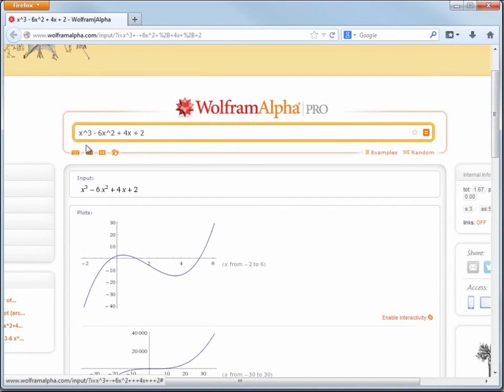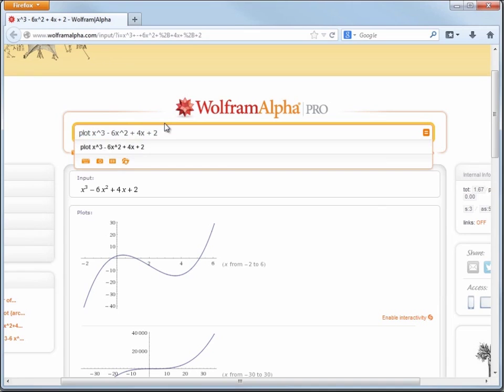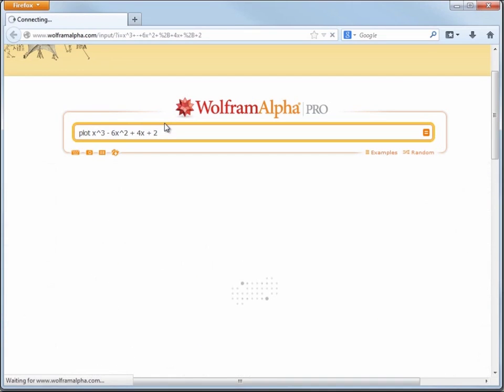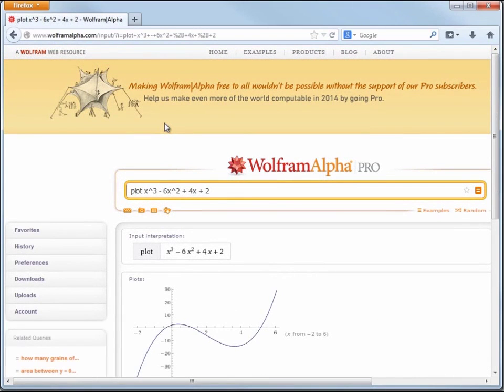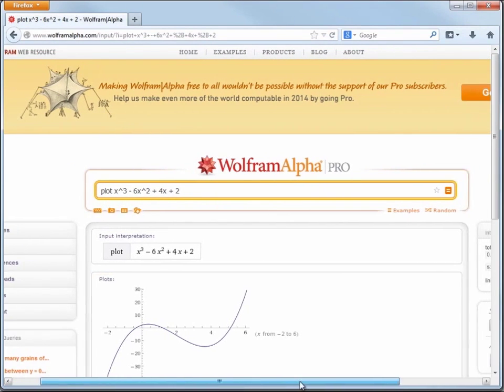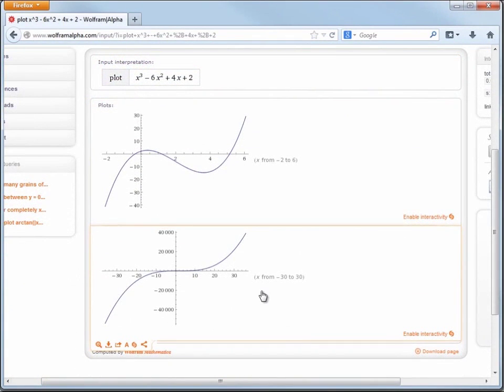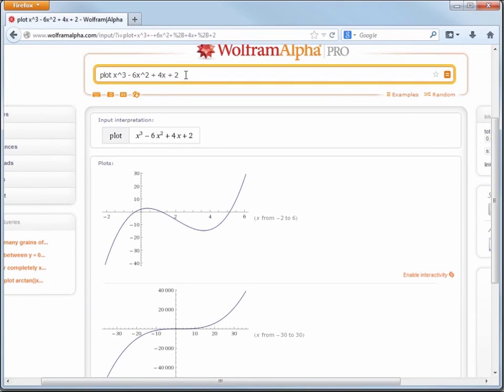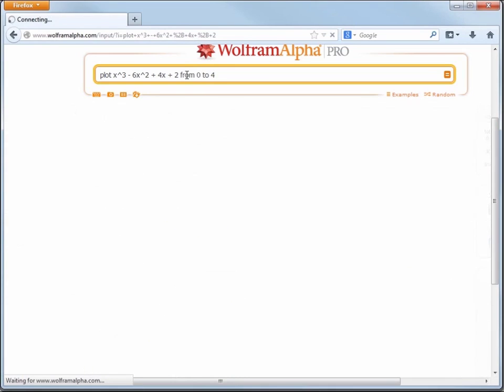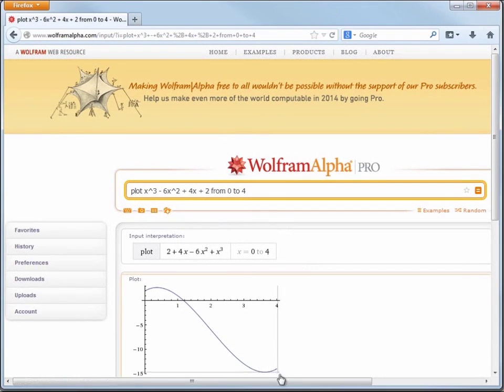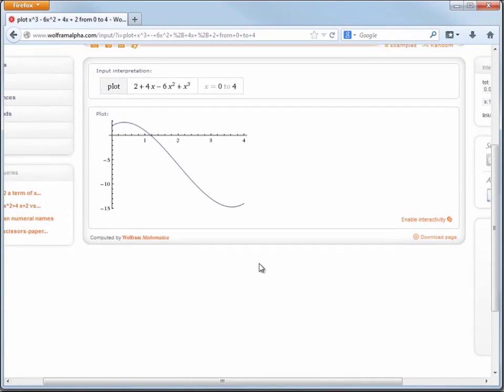But let's say I had a more specific query. Let's say I just wanted the plot. Well, if I told it to plot, that's okay too. Again, we can just enter the query in plain English and get an answer. So it's okay if we want to drill down and get even more specific. Let's say we want it to plot from zero to four. Well, WolframAlpha can handle this too.